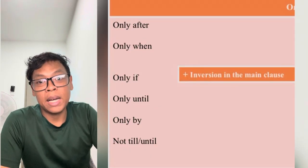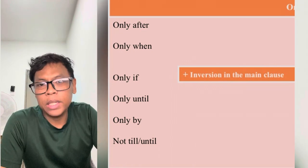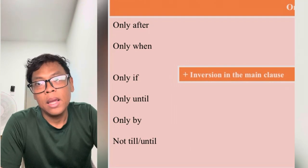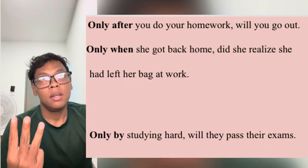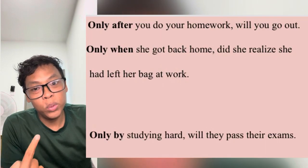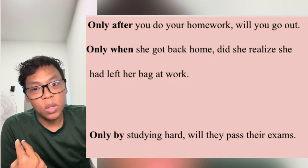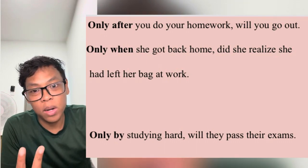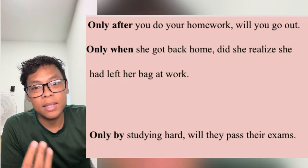The final type is inversion that comes after 'only.' You'll get phrases like 'only after,' 'only when,' 'only if,' 'only until,' 'only by,' and 'not till/until.' Examples: 'Only after you do your homework will you go out.' 'Only when she got back home did she realize she had left her bag at work.' 'Only by studying hard will they pass their exams.'